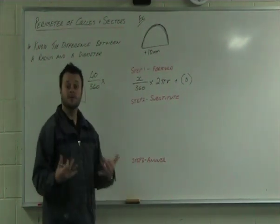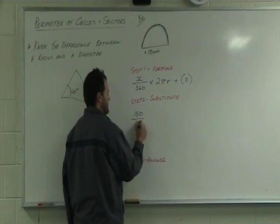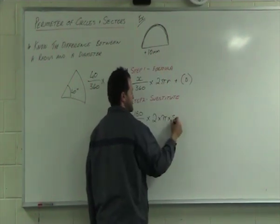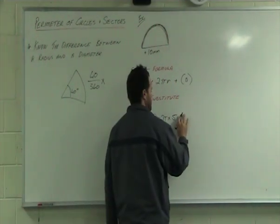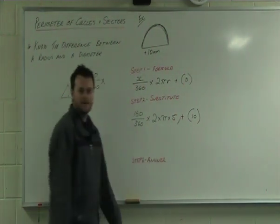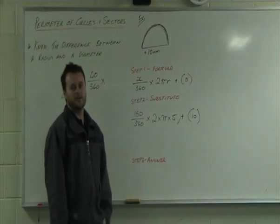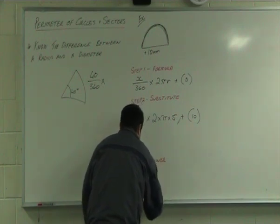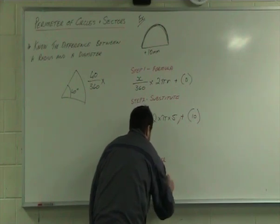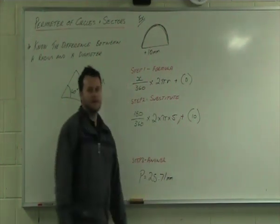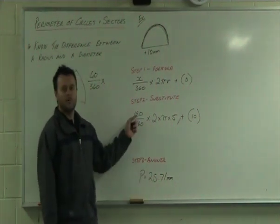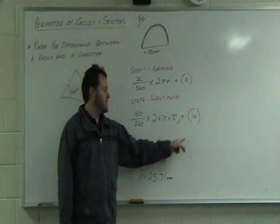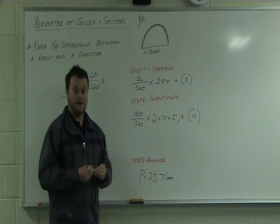The semicircle is half the circle, so that's 180 over 360 as we substitute in. Then we have 2 times pi times the radius, which is 5, plus the diameter, which is 10. Plug all that into your calculator and you get a perimeter of 25.71 millimetres. If you're having trouble, break it into parts: work out the fraction part first, write down the answer, then add 10.